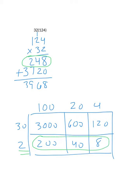When we did 30 times 124, we got 3,720. When we did 30 times 124, we got 3,720. So when we add them both up, we're going to be left with 3,968. So in either problem, you're actually doing the same work.